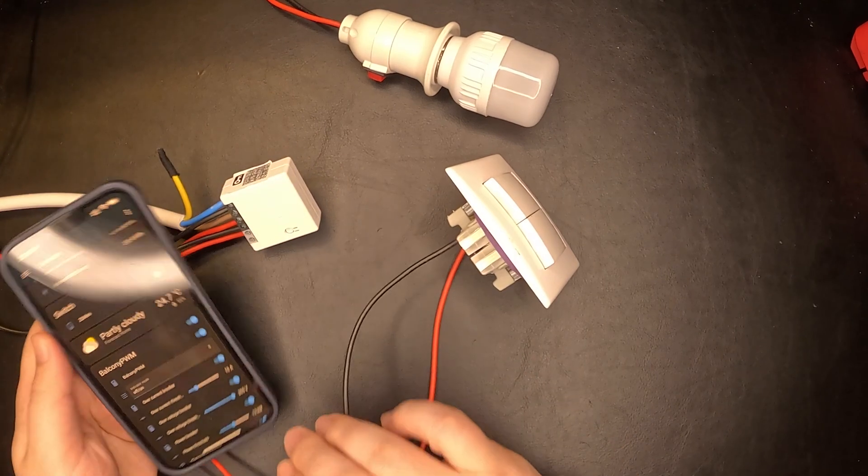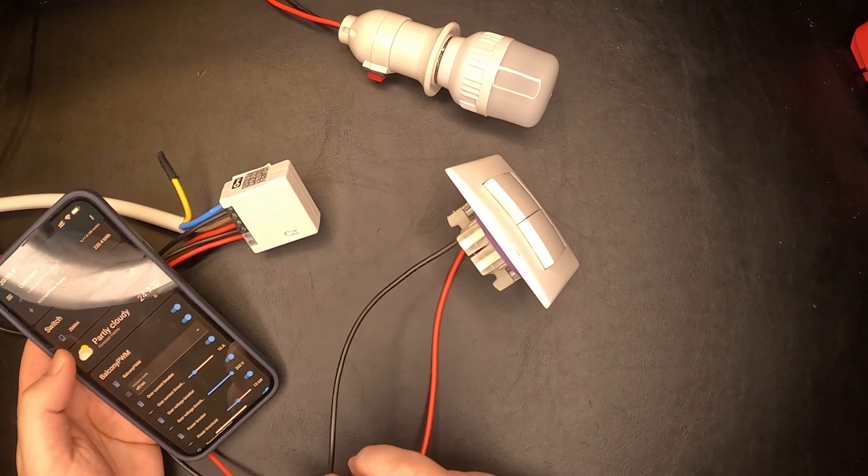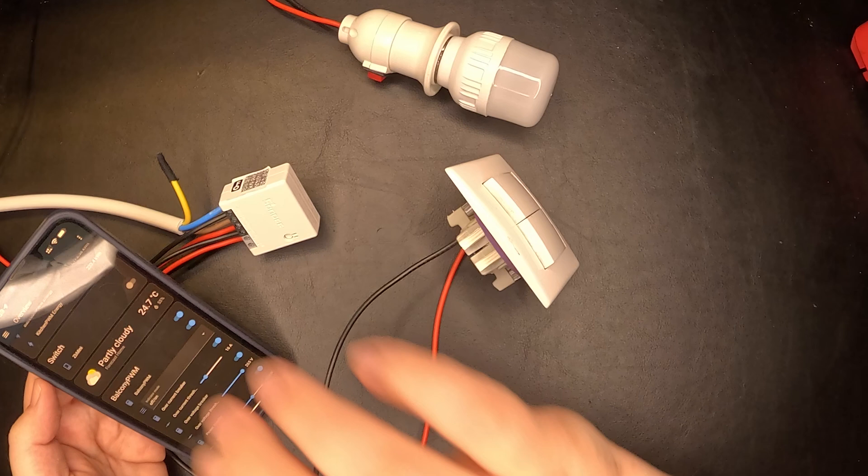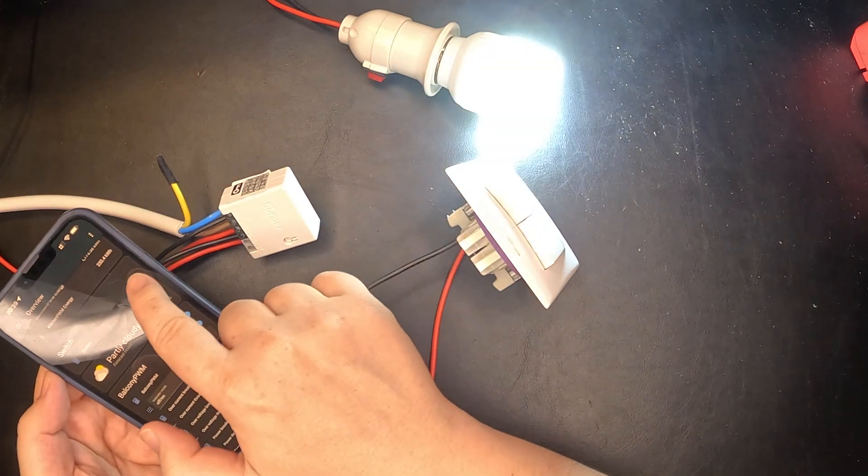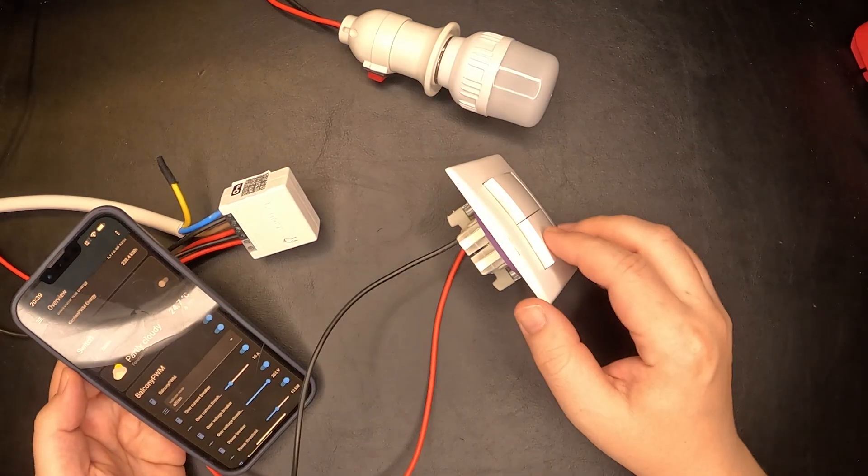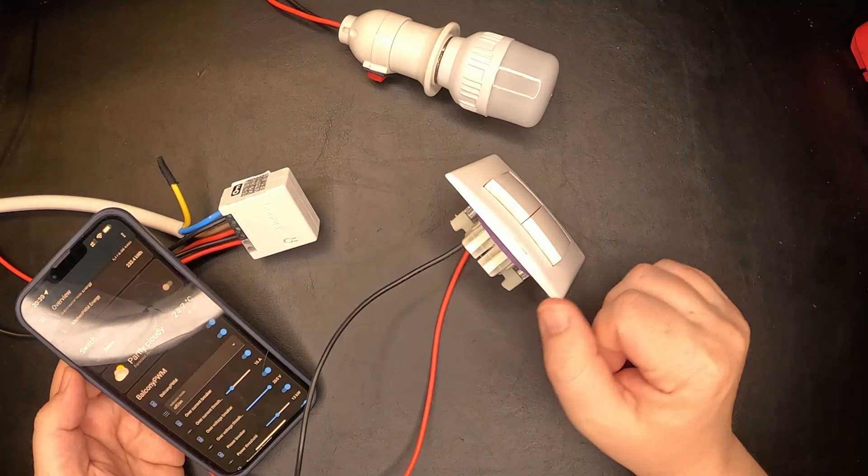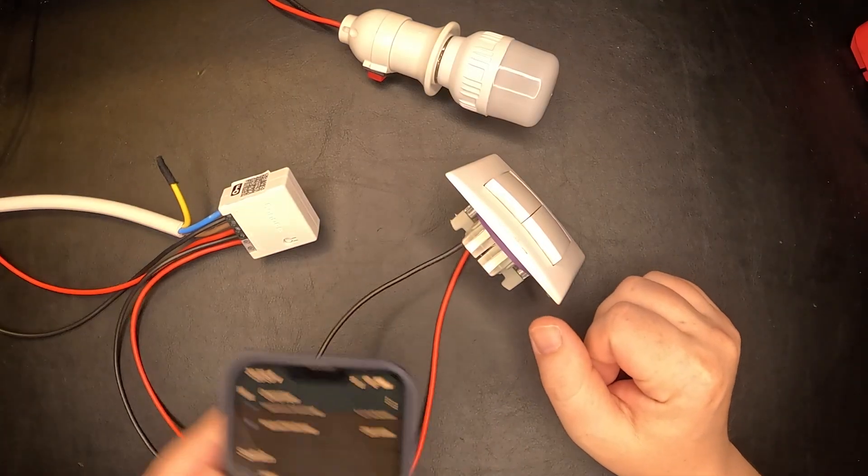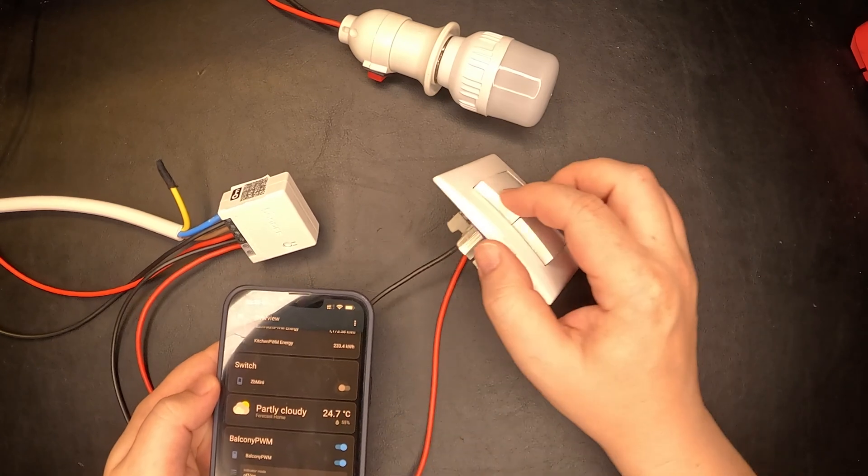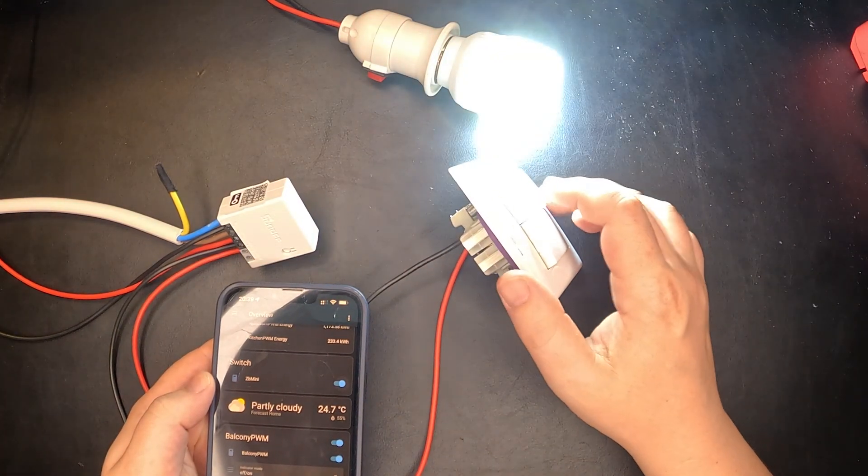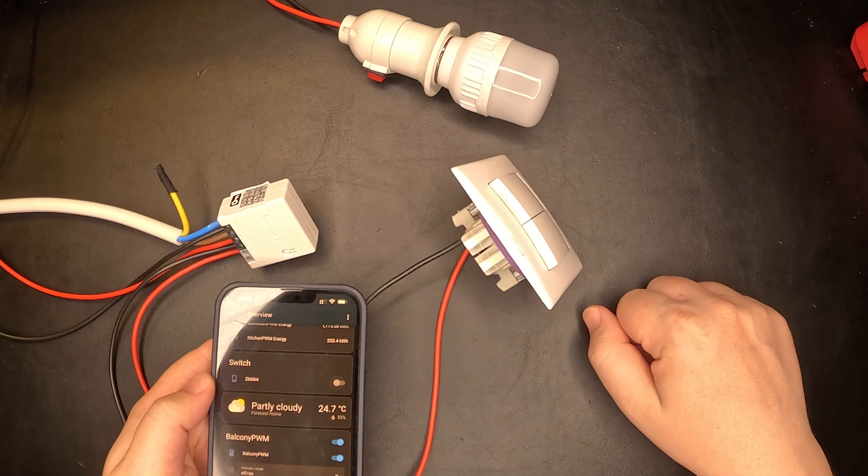I don't think you'll be able to see it on camera, but I have added it here as ZB Mini. So I can now operate it through Home Assistant, or I can use the switch. I don't know if you can see on the phone, this is the switch. At the moment in which I operate the mechanical one, it will also react from Home Assistant.